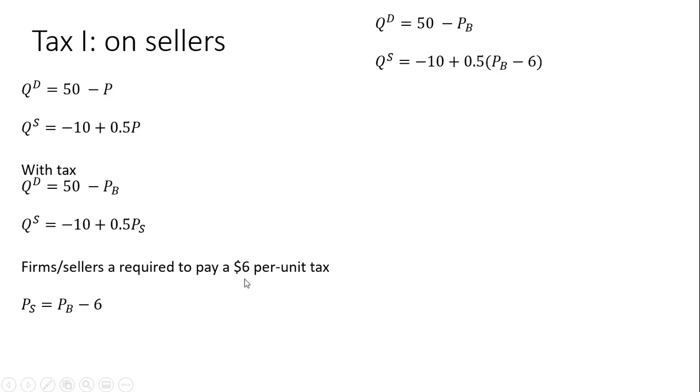If it was a $2 tax or $4 tax, we'd just have a different number here. Minus 2, minus 4, for example. Simplifying this up, this 0.5 multiplied by minus 6 is minus 3. So minus 10 minus 3 is where this minus 13 is coming from.